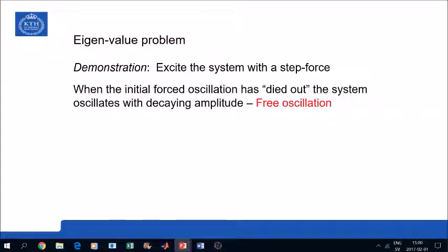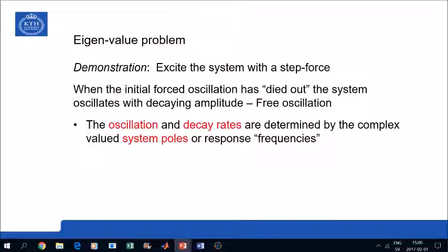So in the demonstration we could observe that when the initial forced oscillation has died out, the system oscillates with a decaying amplitude. And that is the free oscillation, the free vibration of the system. And the oscillation and decay rates, that is the frequency of vibration and the logarithmic decrement of the system, those two properties are actually fully determined by the complex valued system poles or these response frequencies as we have denoted. And this is exactly these eigenvalues that we have talked about earlier.